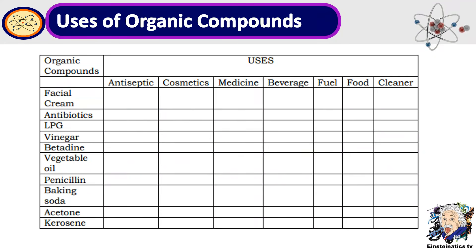First off, try to identify the uses of the following organic compounds. You are just going to check whether the given organic compounds are used as antiseptic, cosmetics, medicine, for beverage, for fuel, food, or cleaner. The given organic compounds are facial cream, antibiotics, down to kerosene. You may pause the video while answering and press play so that you would know the answer. Good luck!